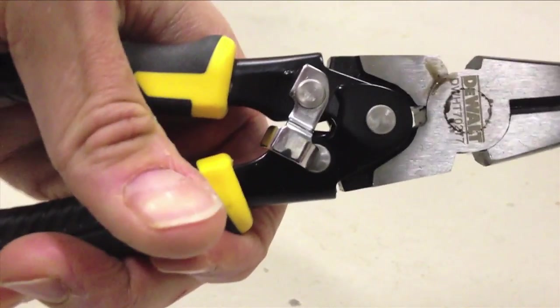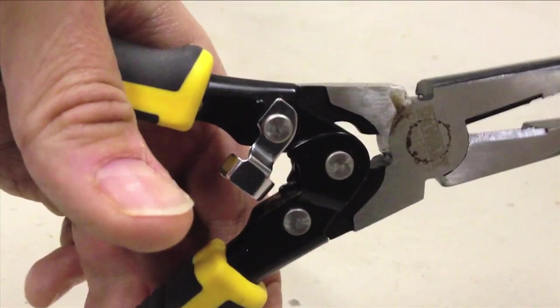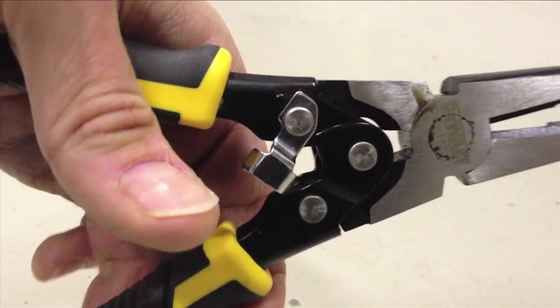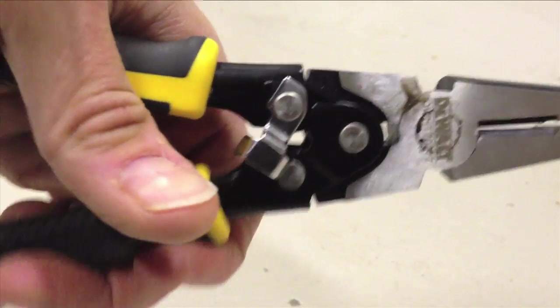The idea here is that the handles move a little bit more than the jaws move, and more movement in the handles equals less movement in the jaws, which equals more force in the jaws.